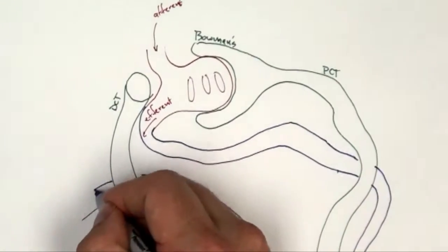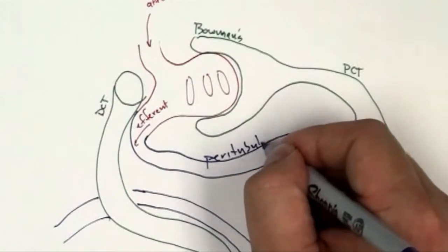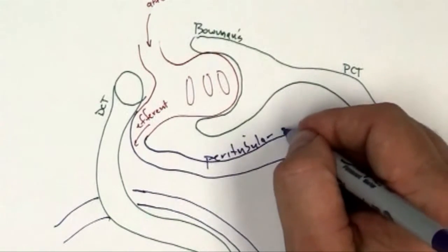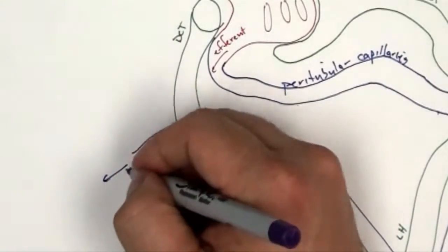And this capillary system, they're called paratubular capillaries. So para meaning around, around the tubules, so paratubular capillaries. It's going to return back out to systemic circulation.